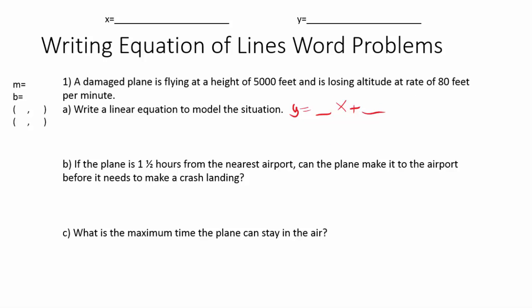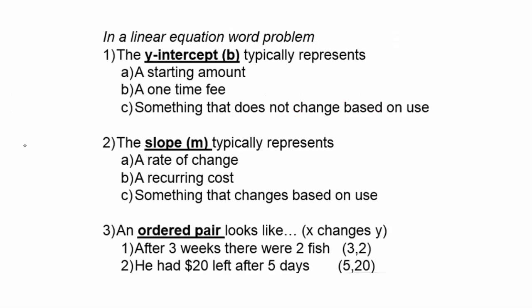Let's look at how to identify whether you're given the slope, the y-intercept, or ordered pairs. The y-intercept, or b, typically represents a starting amount — it could be a one-time fee, something that only happens once. It does not change based on use or the x variable. The slope typically represents a rate of change. A lot of times, if you see the word 'rate,' it'll deal with the slope, but you can't always use that.